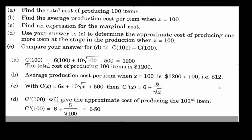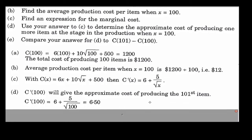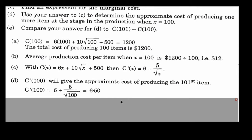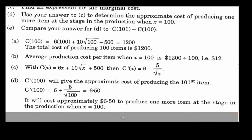The marginal cost is constantly changing as production increases — unlike the linear cost case shown earlier. The average cost has been $12 per item overall, but now at the hundredth item it only costs approximately $6.50 to produce the next one. As more items are produced, the marginal cost keeps going down.